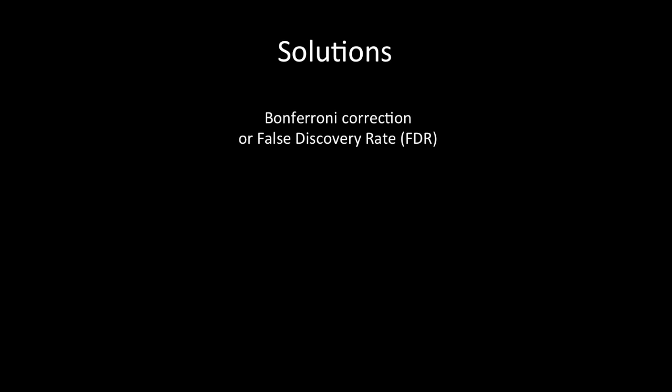There are three ways we can address these inflated false positive rates. One is to use voxel-wise Bonferroni correction or false discovery rate. The problem with these is they can lead to inflated type 2 error rates where you don't detect a result when in reality there is one — analogous to not thinking your cell phone rang when you were actually being called. Another approach is to use a more strict cluster-defining threshold of p = 0.001 with updated versions of 3dClustSim to more accurately model the spatial autocorrelation function.